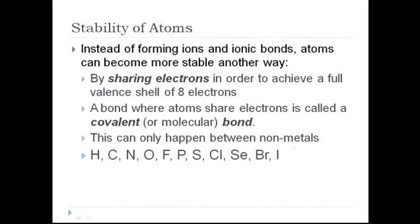Let's talk again about the stability of atoms. Sometimes, in order for atoms to become stable, they form ions and then bond with other ions in ionic bonds. There is another way for atoms to become more stable — atoms that don't form ions or ionic bonds can instead share electrons in order to get a full valence shell of eight electrons. A bond where atoms are sharing electrons is called a covalent or a molecular bond. This can only happen between nonmetals.